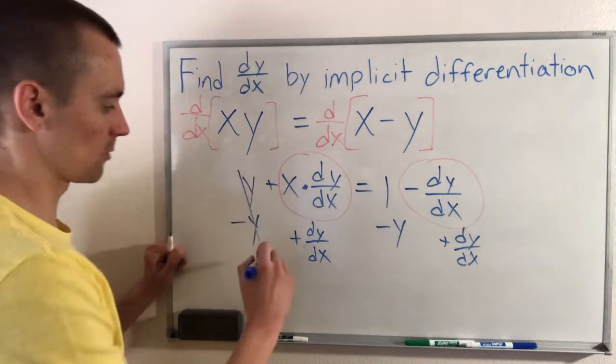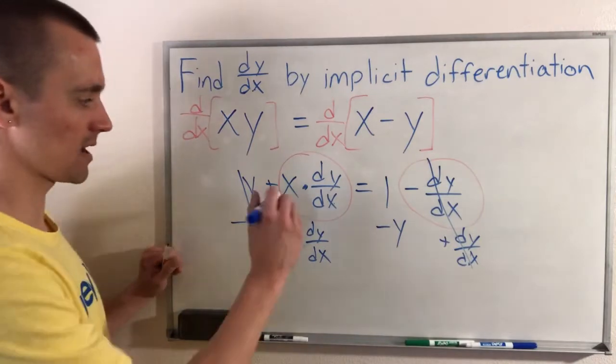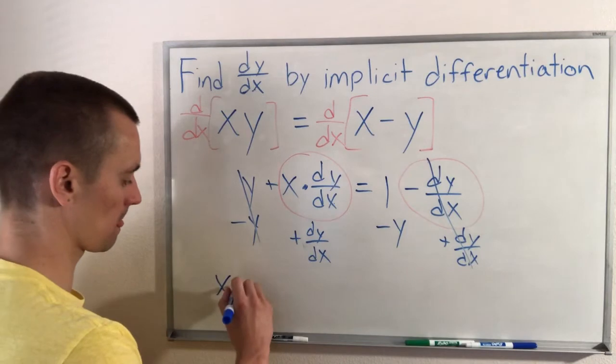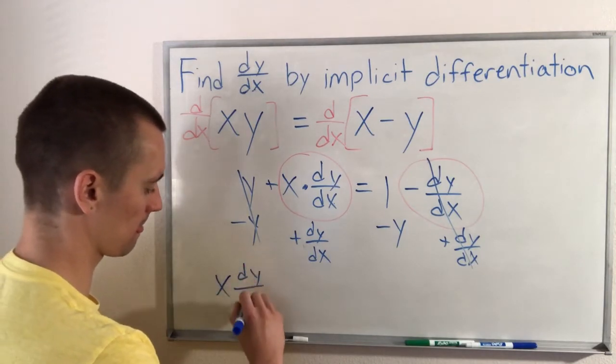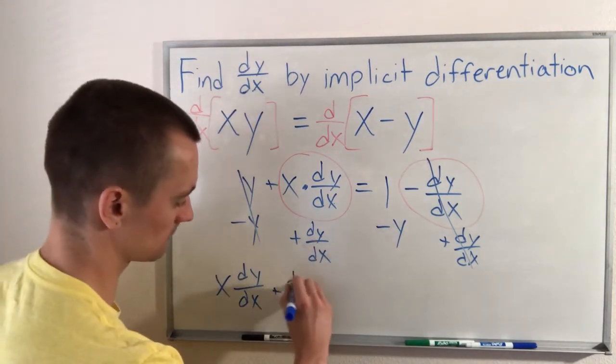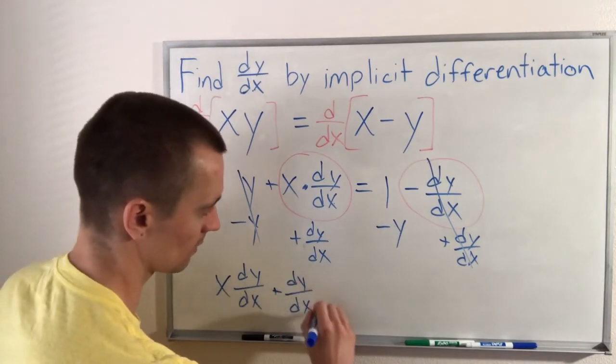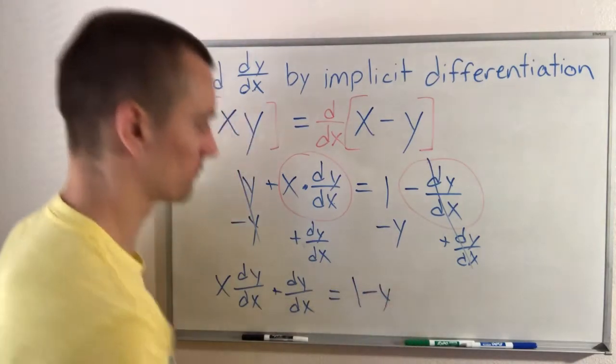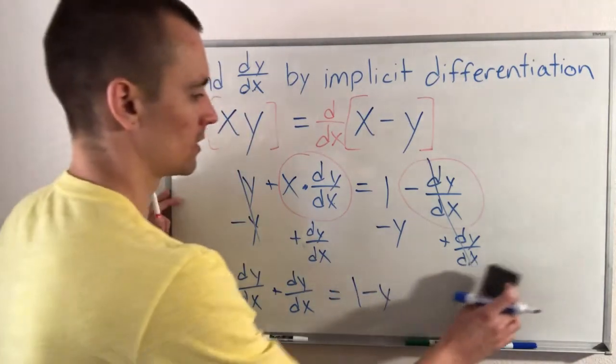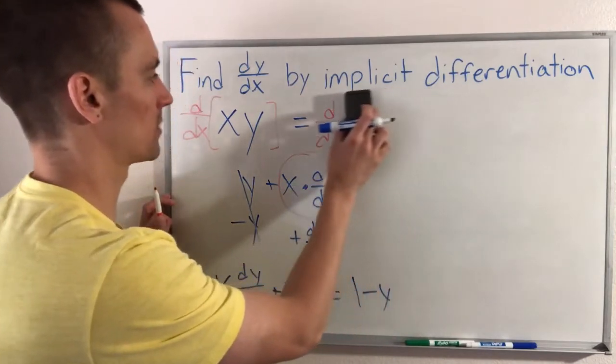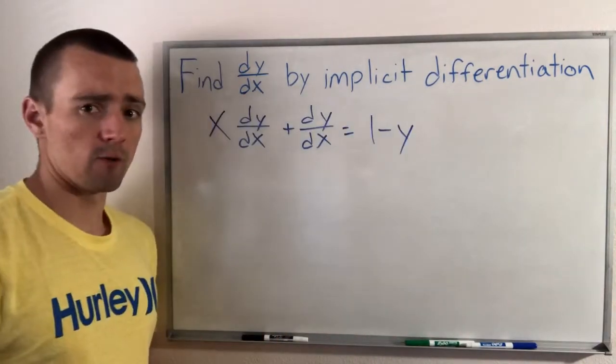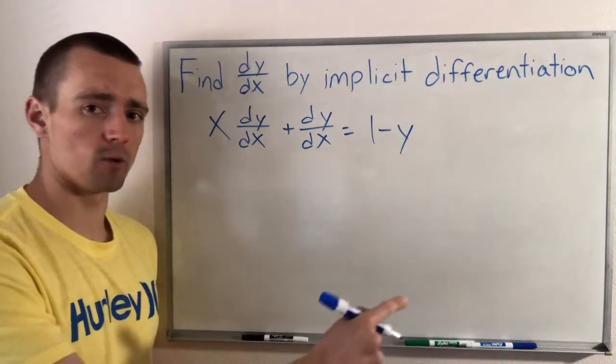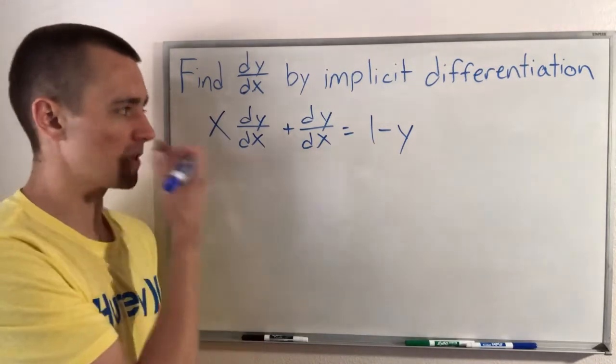So subtracting y cancels that. Adding dy/dx cancels that. So we're going to be left with x times dy/dx plus dy/dx equals 1 minus y. Okay, so let's just move this up to the top here. Okay, so now we've gotten all of our dy/dx terms on one side of our equation and all of our non-dy/dx terms to the other side.